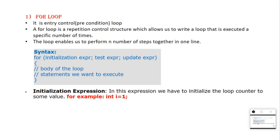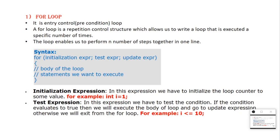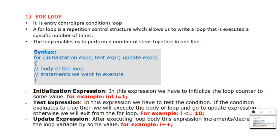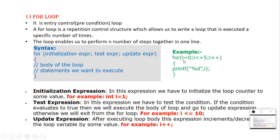Initialization is where we initialize a value — for example, i = 1. Test expression is the condition — for example, i <= 10. If the condition is satisfied it executes the body, otherwise it exits the loop. Update expression is either increment or decrement — for example, i++. Without the update expression, the loop will not end. For example: i = 0 as initialization, i <= 5 as test expression, i++ as update expression, and printf("%d", i) as the statement.